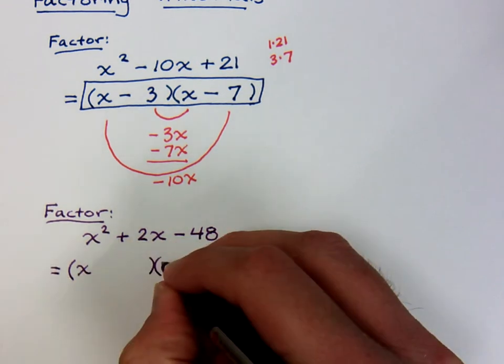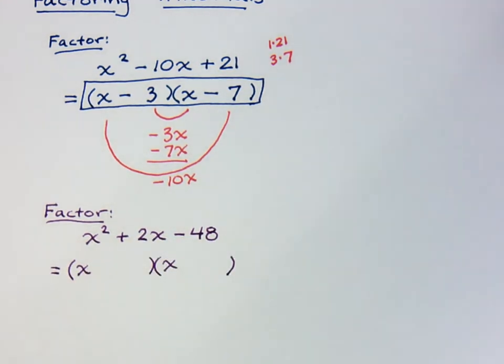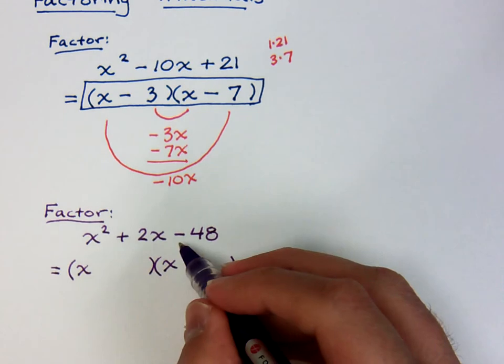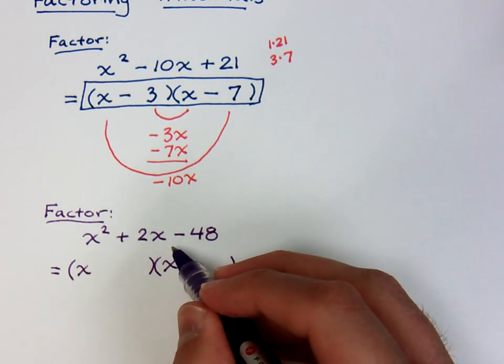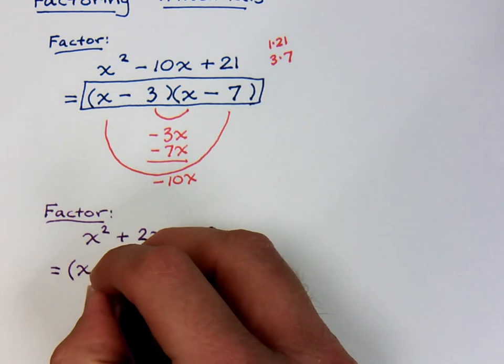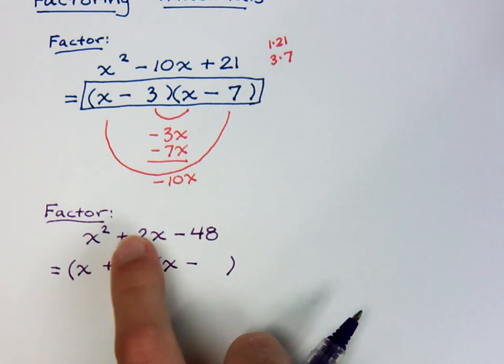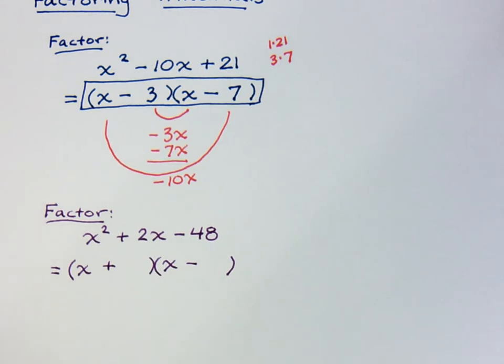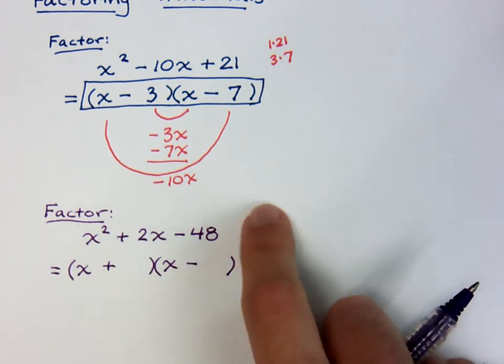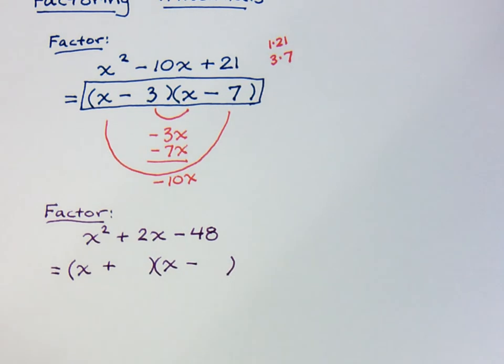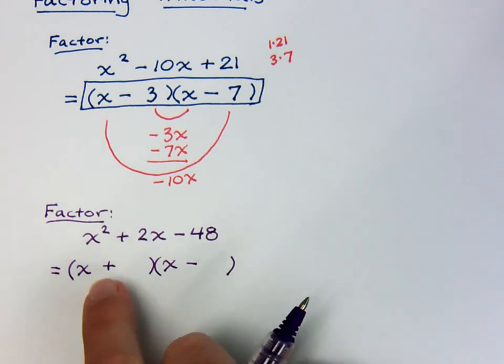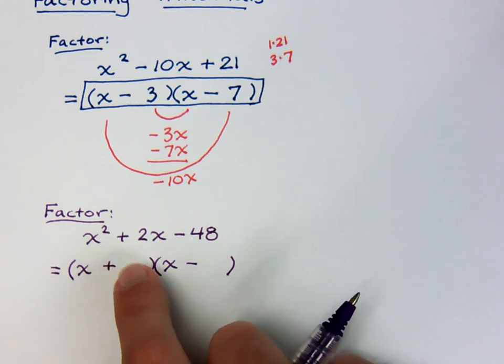X², of course, is going to break down as X times X. And now you've got to look at your sign. Everything up to this point has had a positive constant term. This guy's negative. How do you multiply to get a negative number? Well, you have to have one positive and one negative. Now we've got to find numbers that will add up to give me a positive 2.